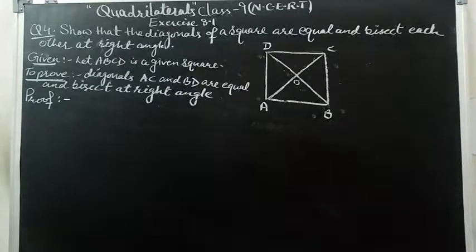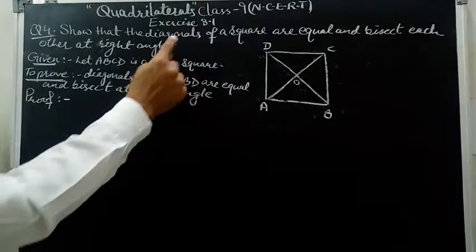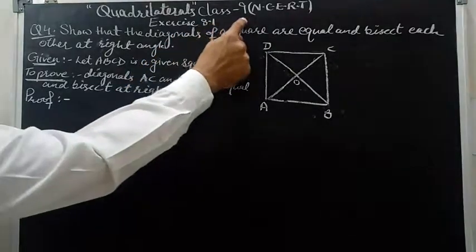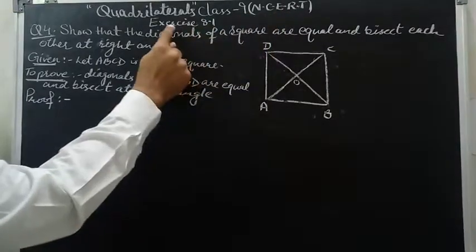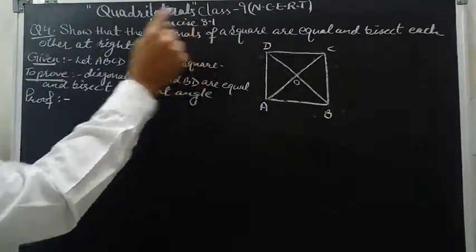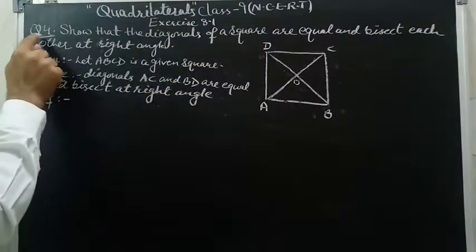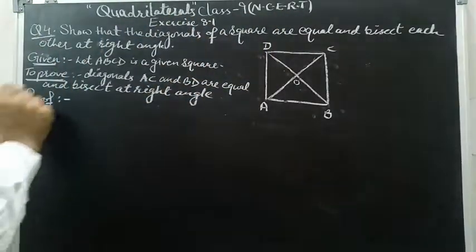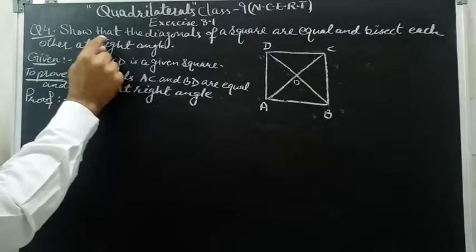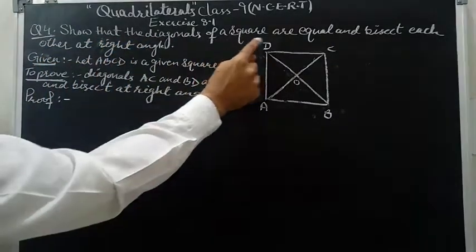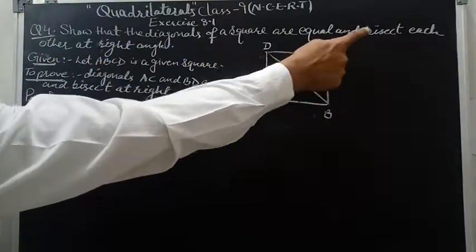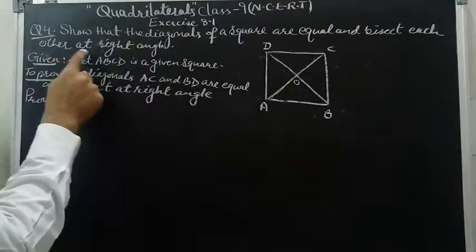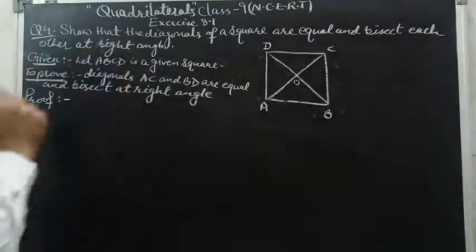Let's solve this question from the chapter Quadrilaterals, Class 9 NCERT, Exercise 8.1, Question 4: Show that the diagonals of a square are equal and bisect each other at right angles.